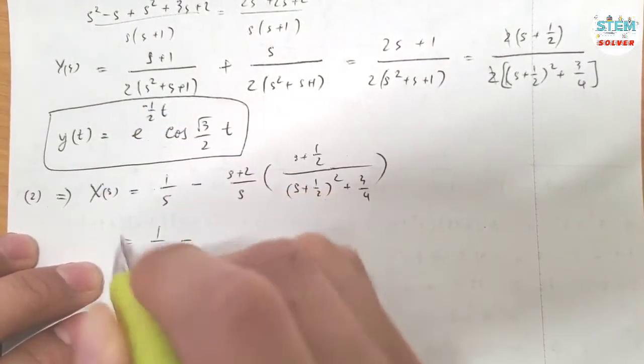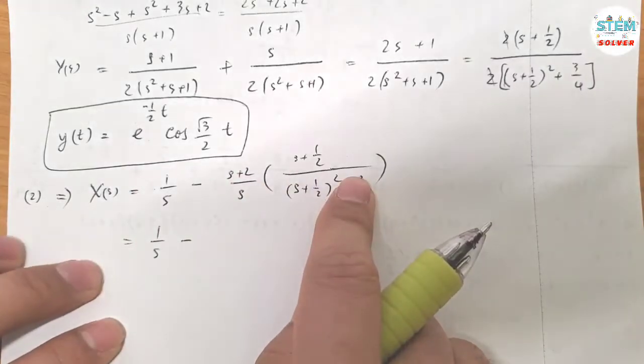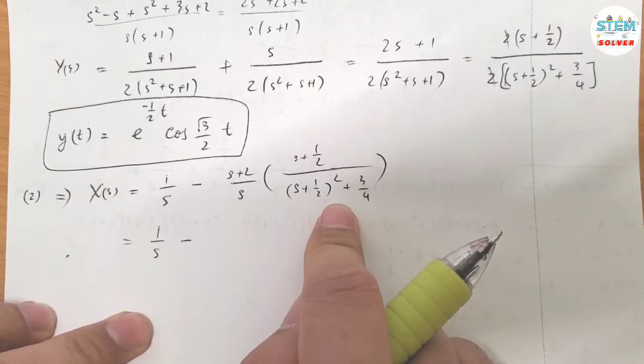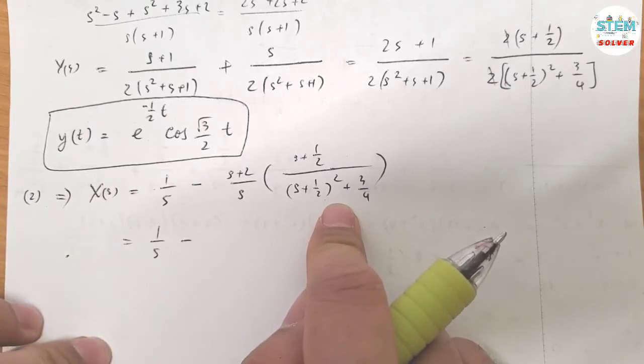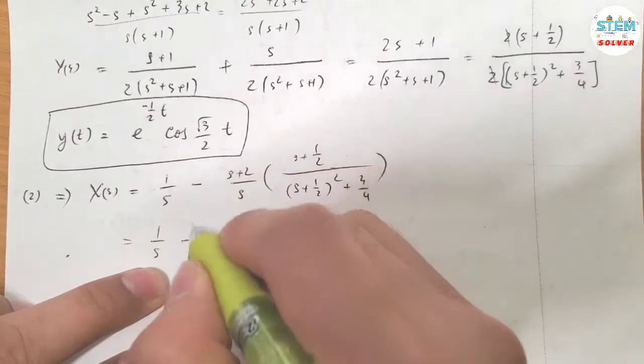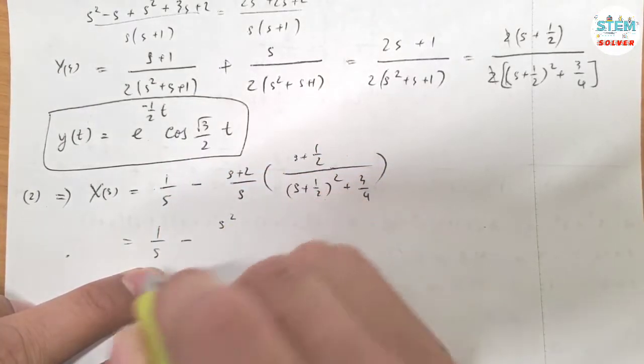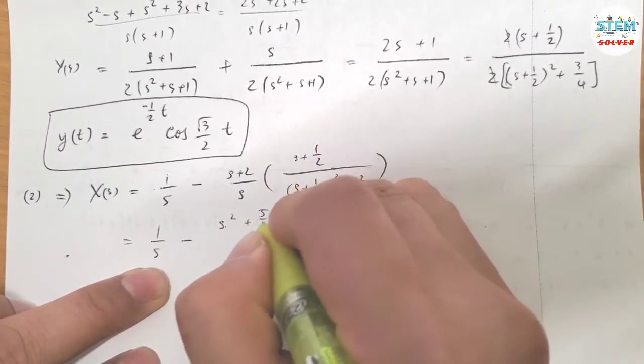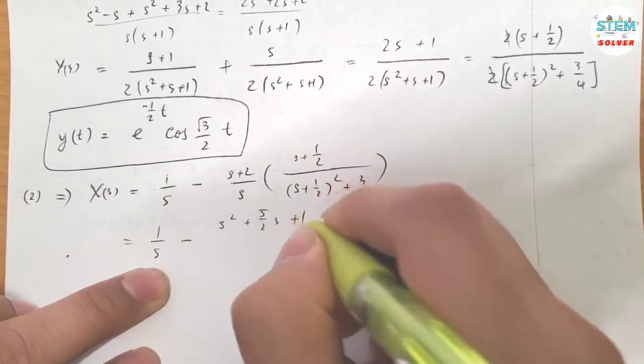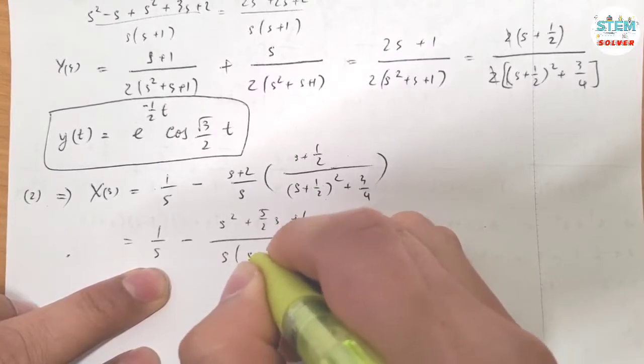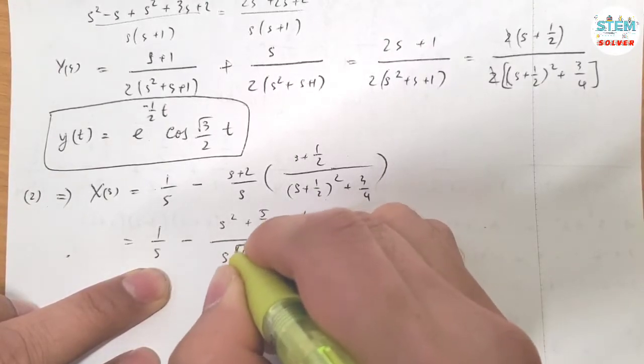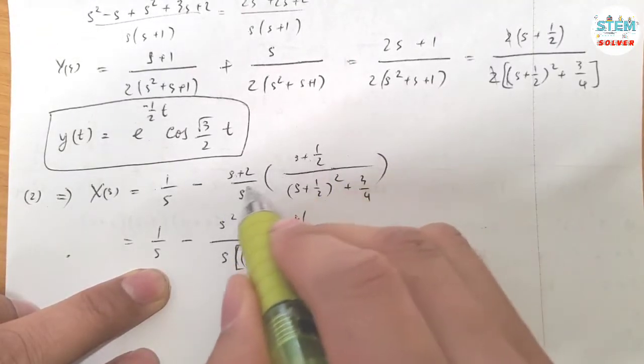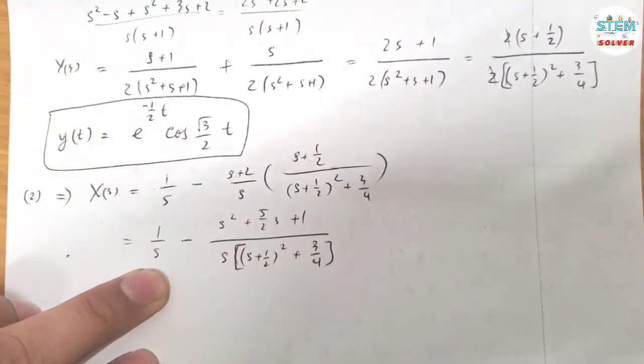Now I distribute this out. So multiply this out, I have (S² plus 5/2·S plus 1) over (S times ((S plus 1/2)² plus 3/4)). So you just multiply top together, multiply the bottom together.